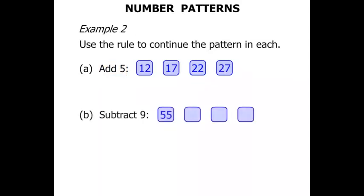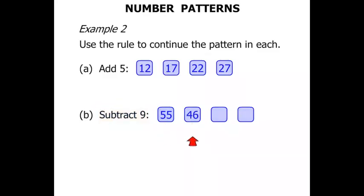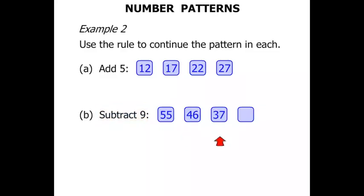The next one: we need to subtract 9. Starting with 55, let's take away 9, we get 46. From 46, when we subtract 9, we get 37. We're at 37, now we need to subtract 9, we get down to 28. Terrific!